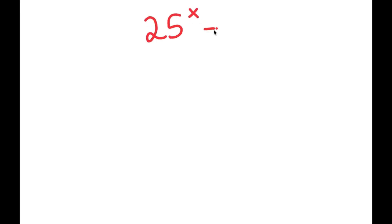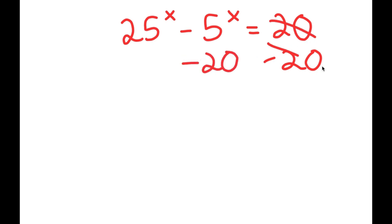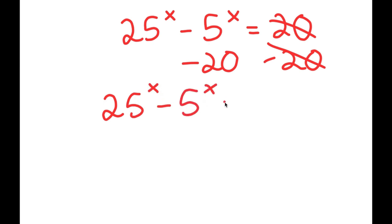In this video, I'm going to be solving the equation 25 to the power of x minus 5 to the power of x is equal to 20. To solve this equation, I'm going to first start by subtracting 20 on both sides. These two cancel out and I get 25 to the power of x minus 5 to the power of x minus 20 is equal to zero.